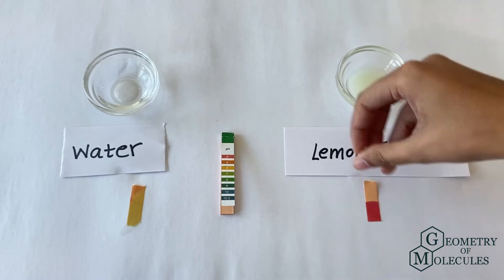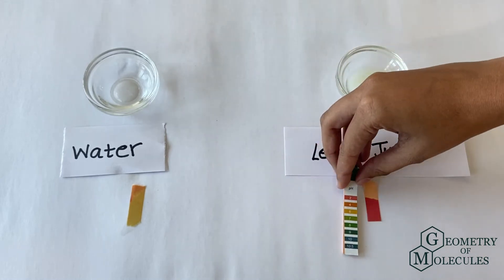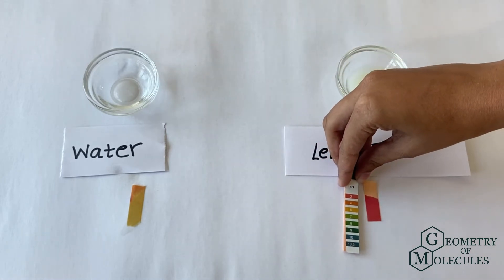As you can see, the strip has instantly changed its color to dark pink. That indicates that lemon juice has a pH of 2.